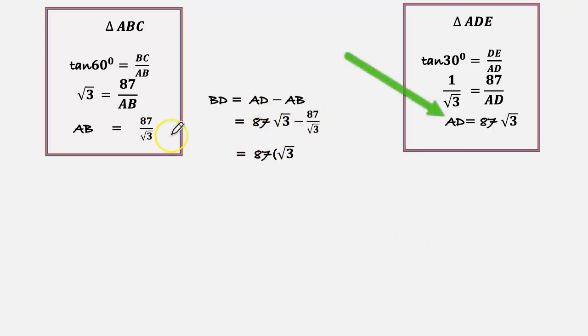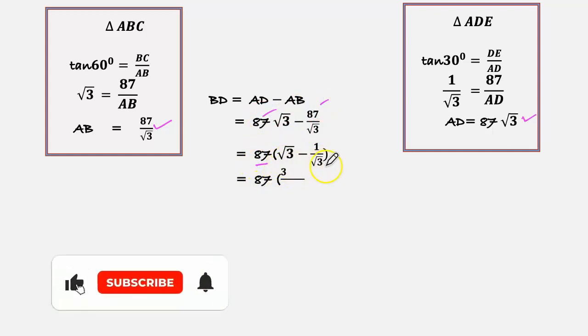AD is 87√3 and AB is 87 by √3. 87 is common, so we can take the common. So √3 minus 1 by √3. Taking the LCM, so we are getting √3 into √3 is 3, 3 minus 1 by √3.